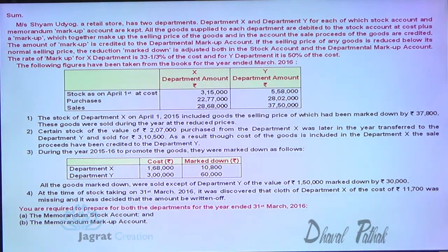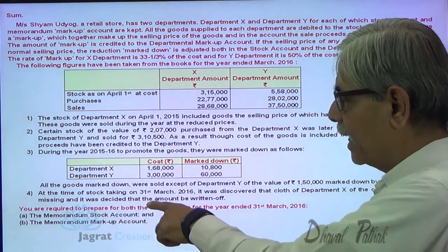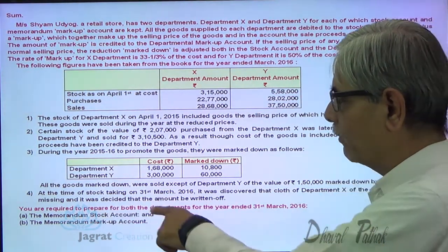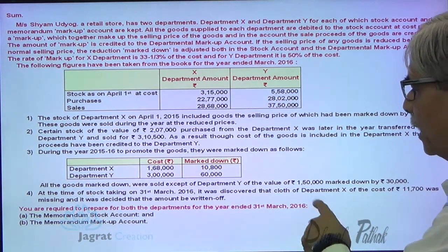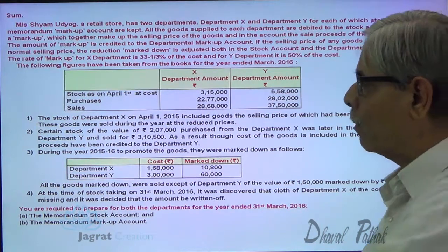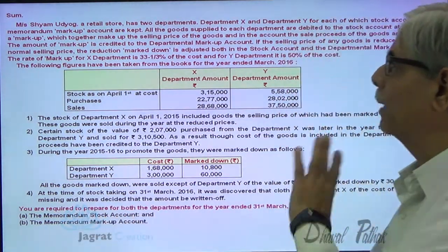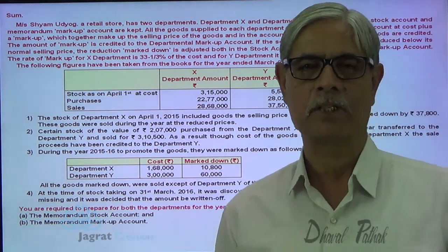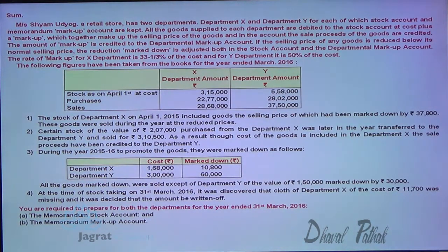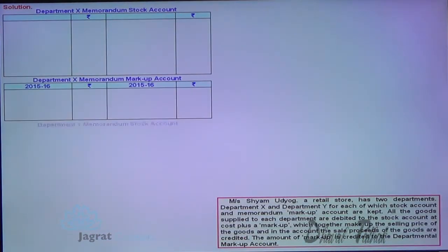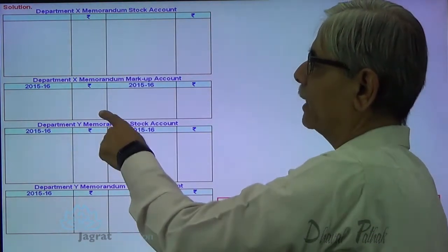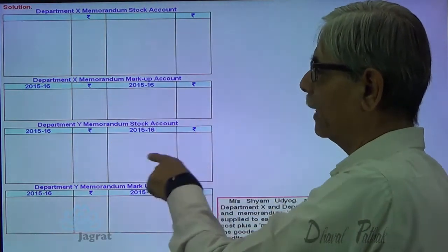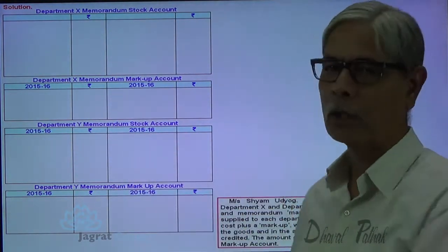At stock-taking on 31st March 2016, it was discovered that cloth of Department X costing 11,700 was missing and decided to be written off. We are required to prepare both the memorandum stock account and memorandum markup account for Department X and Department Y for the year ended 31st March 2016.